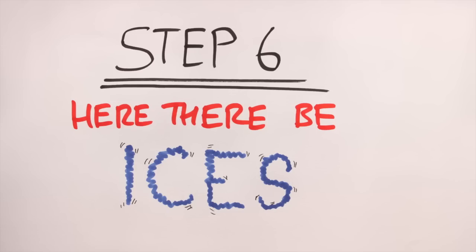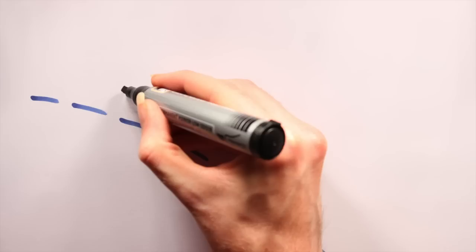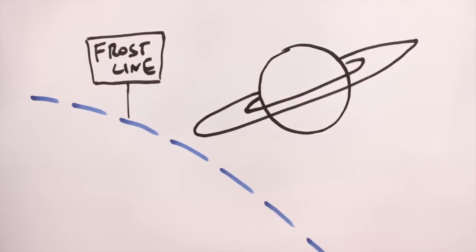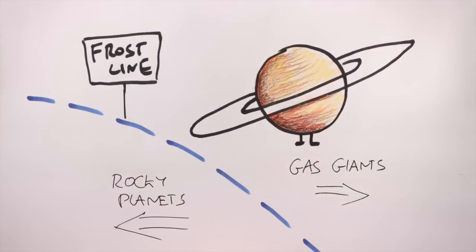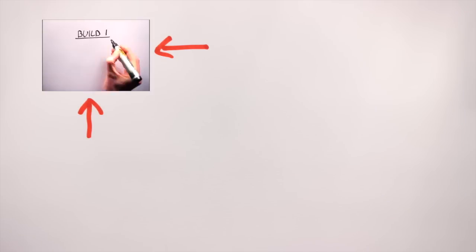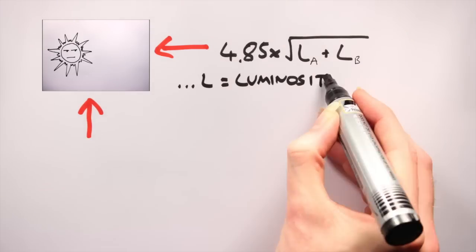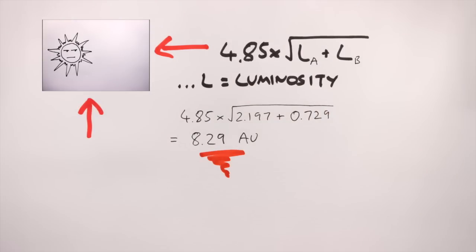Step 6, here there be ices. Next up, calculate your system's frost line, the point beyond which gas giants will form. Again, I've covered this in the previous video, so I won't dwell on it, but like the last step, we need to account for the additional luminosity using this equation. For the Mikkel system, it works out at roughly 8.3 AU.